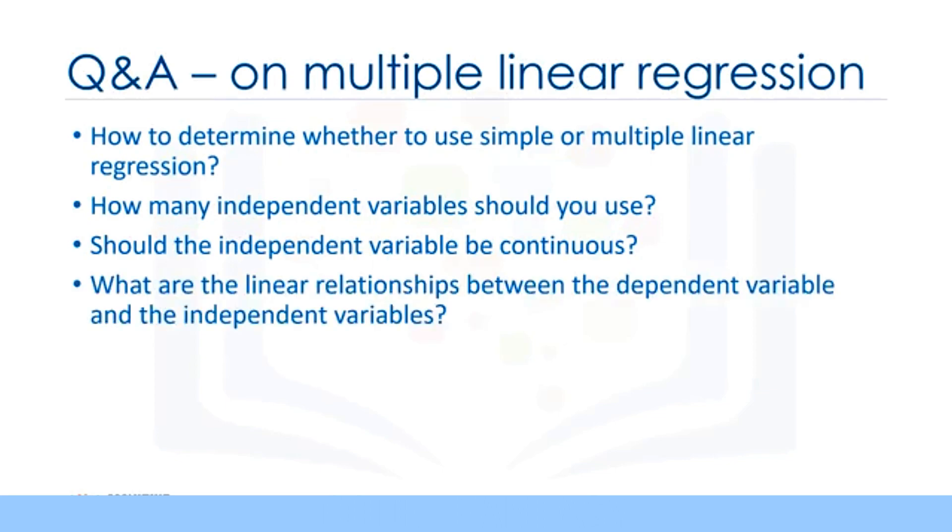As a last point, remember that multiple linear regression is a specific type of linear regression. So there needs to be a linear relationship between the dependent variable and each of your independent variables. There are a number of ways to check for linear relationship. For example, you can use scatter plots and then visually check for linearity. If the relationship displayed in your scatter plot is not linear, then you need to use nonlinear regression.